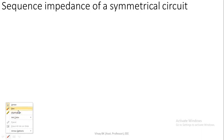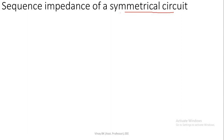Today's session will start with the sequence impedance of symmetrical and asymmetrical circuits. In our previous videos, we discussed sequence components: positive sequence components, negative sequence components, and zero sequence components. In this section, we are going to discuss sequence impedance of a symmetrical circuit. There are three sequence networks: positive, negative, and zero sequence.